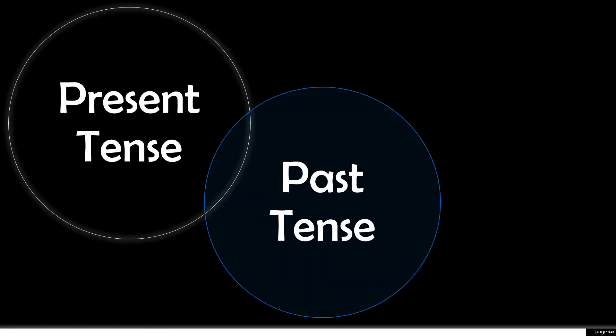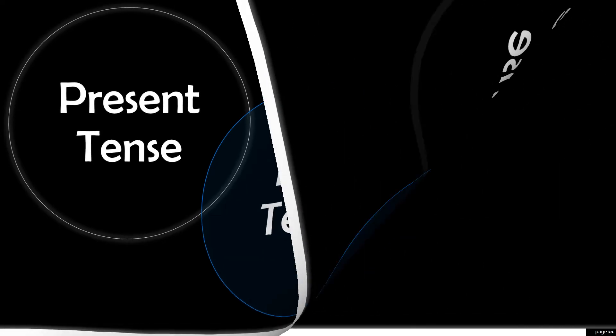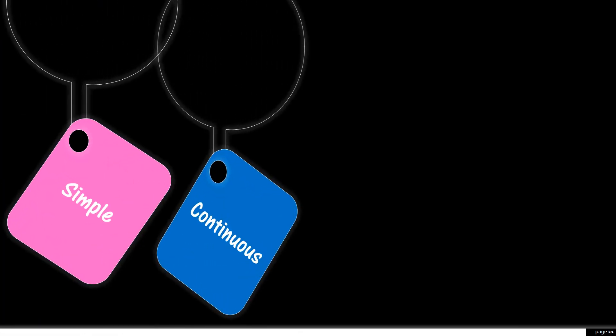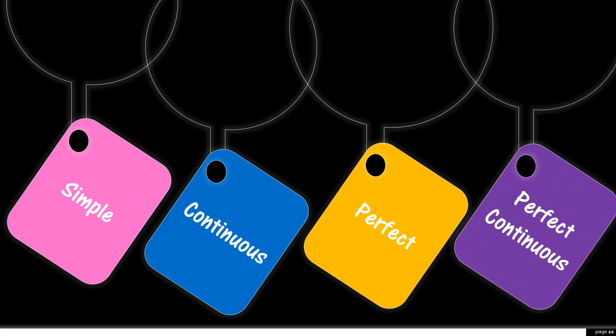There are three main verb tenses: present tense, past tense, and future tense. In order to show at what stage an action is, each of these three tenses is divided into four subdivisions: simple, continuous, perfect, and perfect continuous. So there are 12 verb tense forms in English.